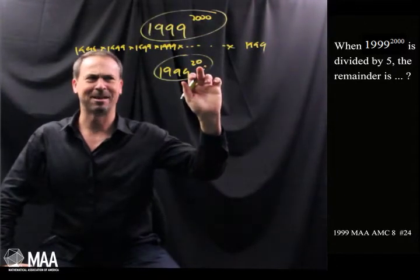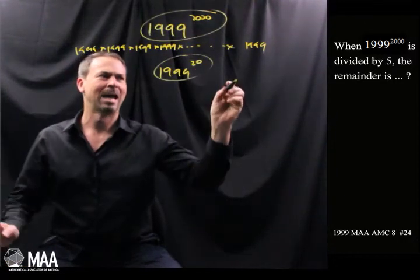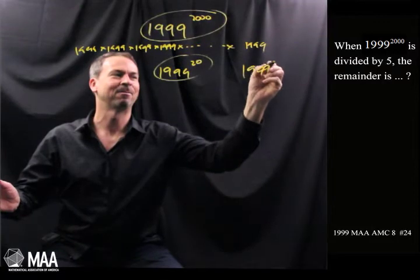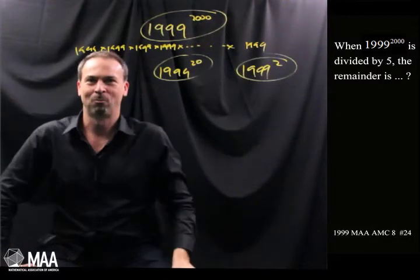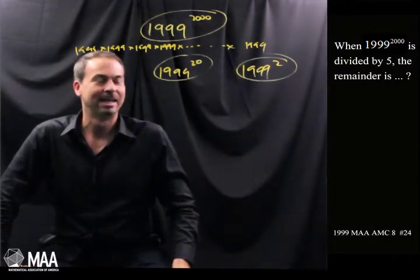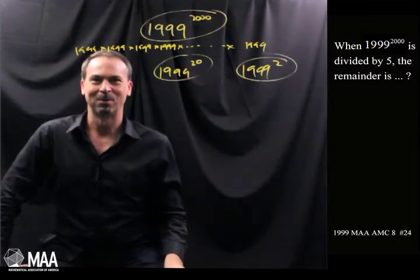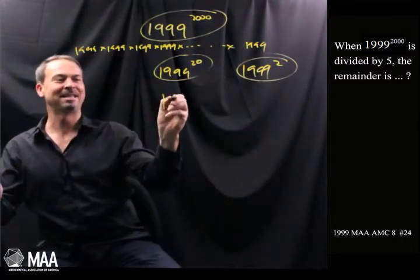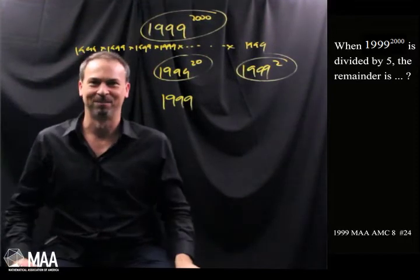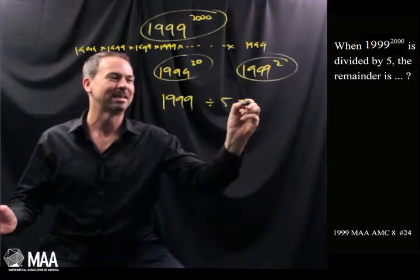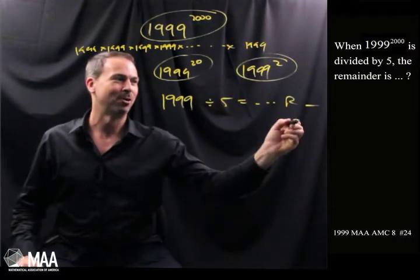Actually that still seems hard, 1999 times itself 20 times. How about a smaller version still? How about 1999 to the 2nd power? Work out what that remainder is upon division by 5. In fact, even that's a bit too hard. What do I do with the smallest problem there is? Just 1999 itself. If I divide it by 5, I'll get something with some remainder. I wonder what remainder it is.